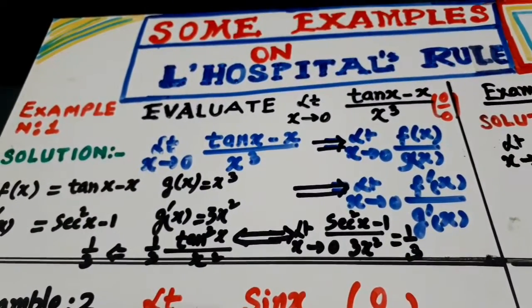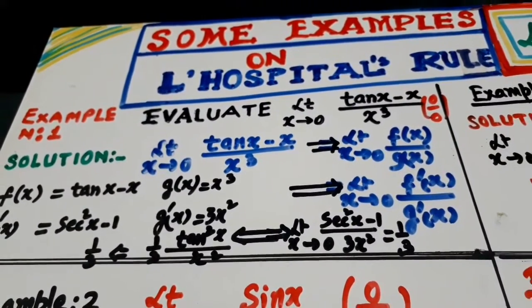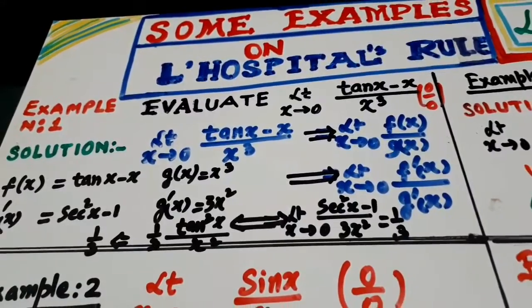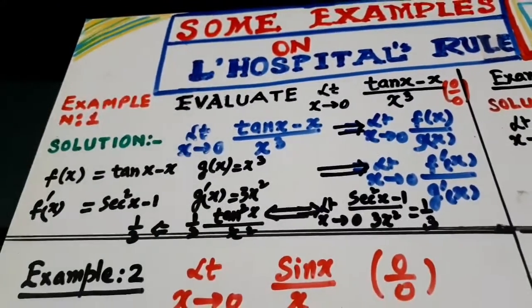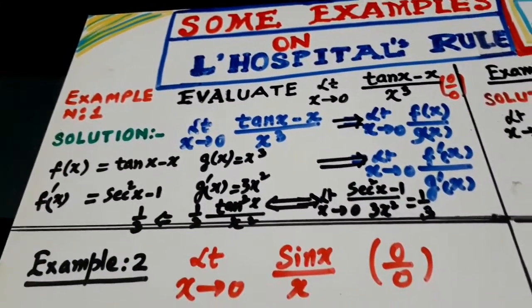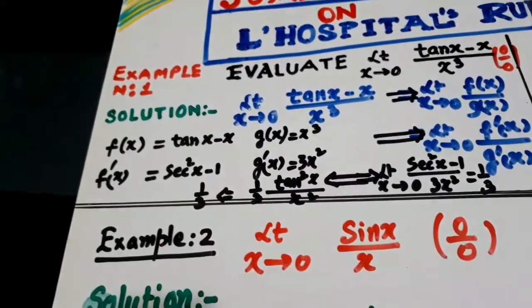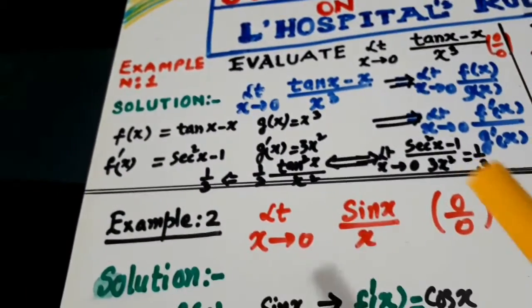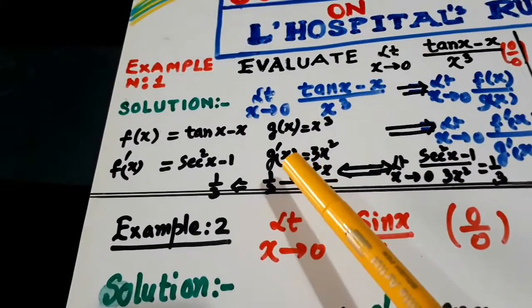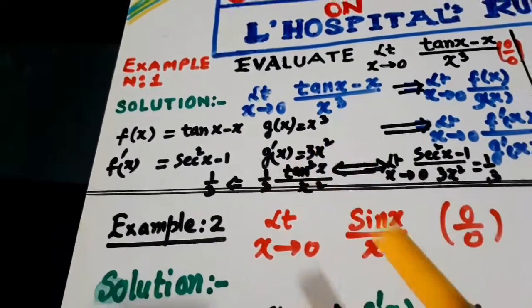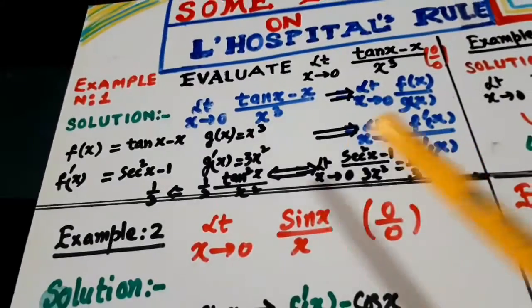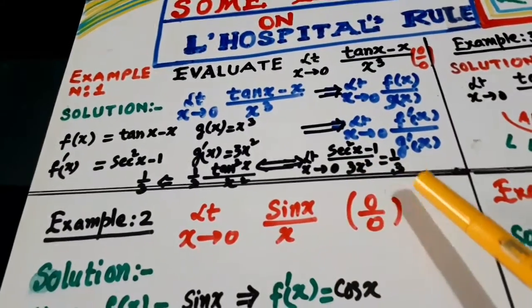Evaluate limit x goes to 0, tangent x minus x over x cube. Take the derivative of the numerator as well as denominator. The derivative of the numerator is secant square x minus 1. And derivative of denominator is 3x square. Just put it here and put the value x goes to 0. You will get 1 by 3.